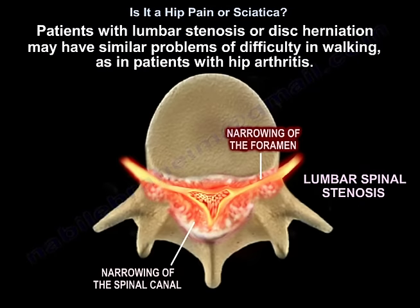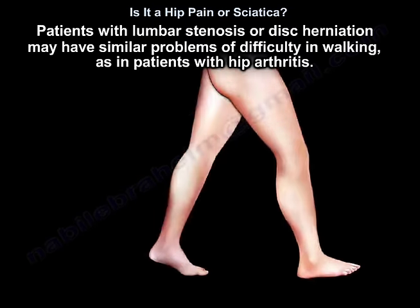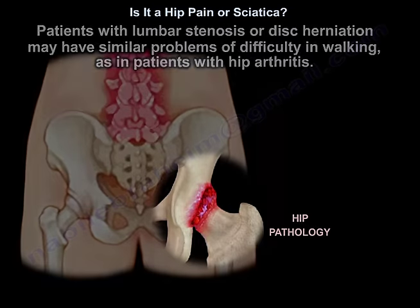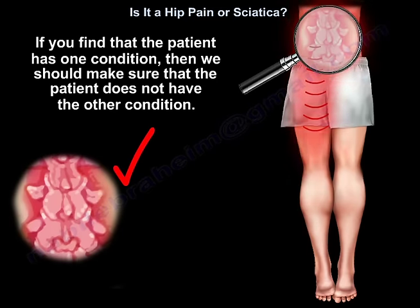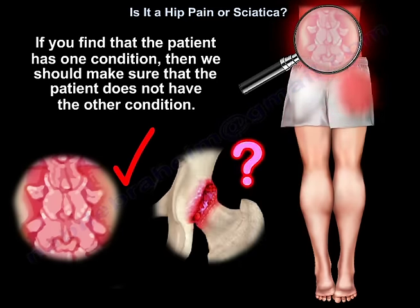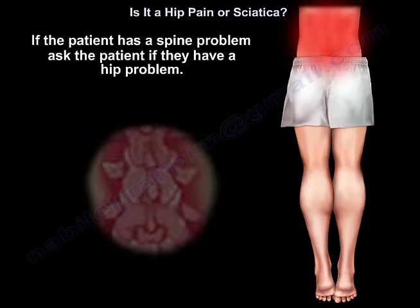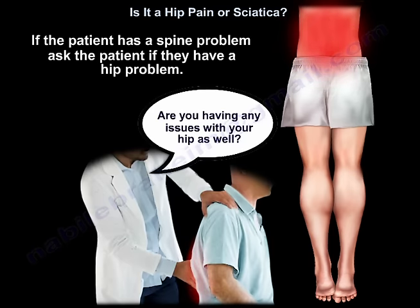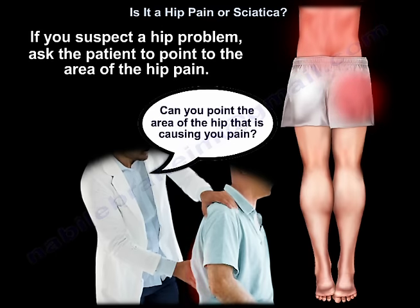Patients with lumbar stenosis or disc herniation may have similar problems of difficulty in walking as in patients with hip arthritis. If you find that the patient has one condition, we should make sure the patient does not have the other condition. If the patient has a spine problem, ask the patient if they have a hip problem. And if you suspect a hip problem, ask the patient to point to the area of the hip pain.